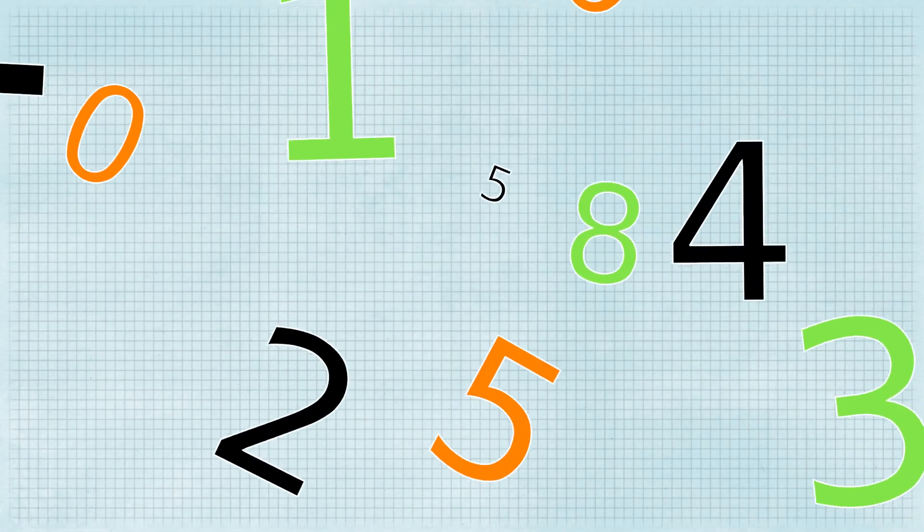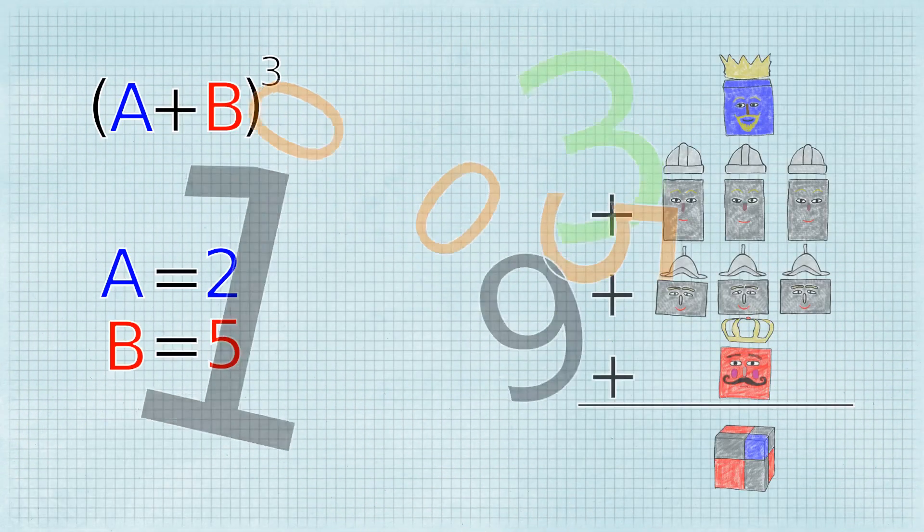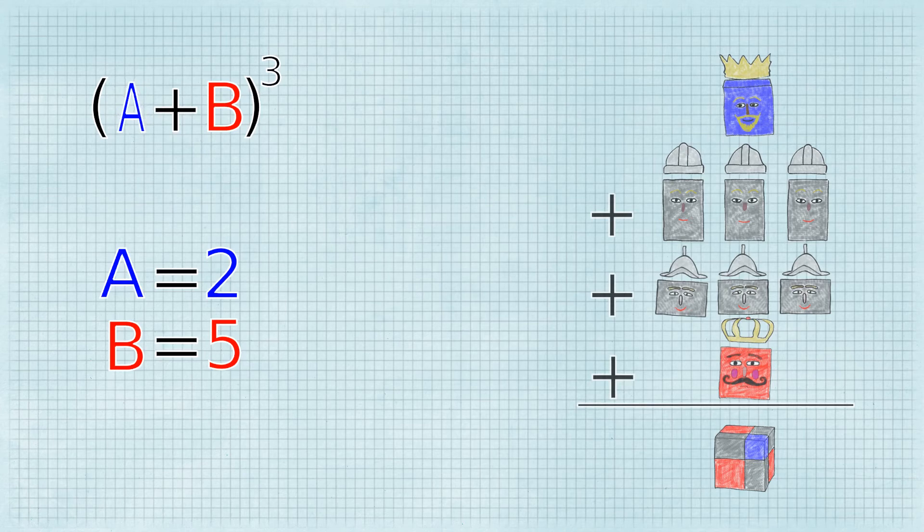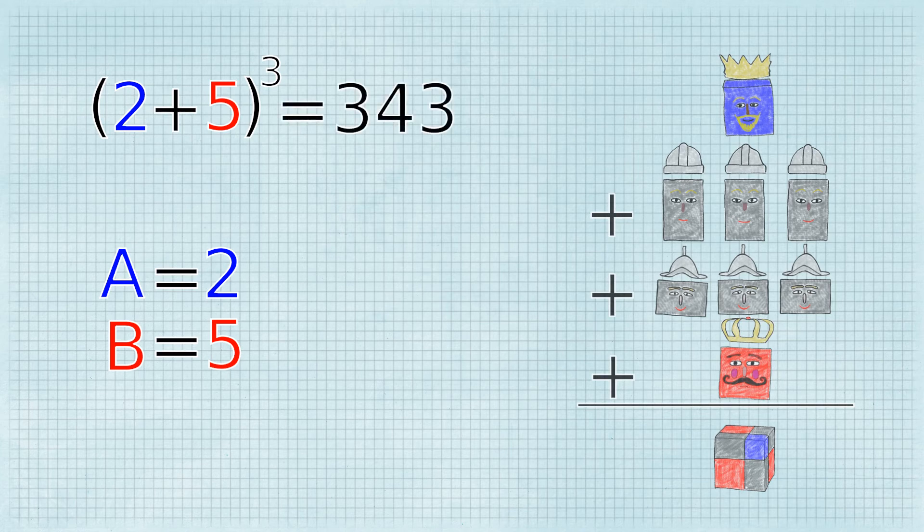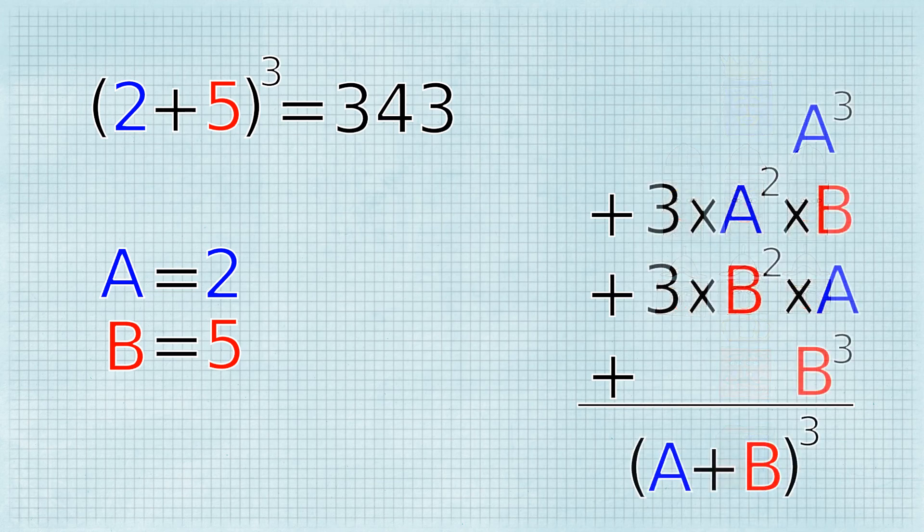Shall we try with numbers now? Let's use the formula we have obtained. If A is 2 and B is 5, then 2 plus 5 cubed equals 343. According to our formula,